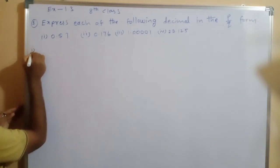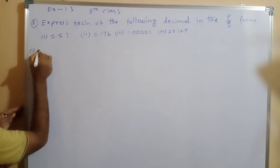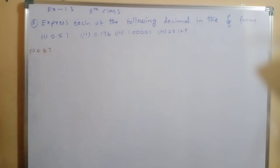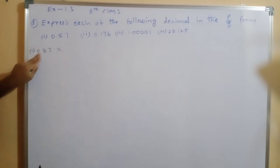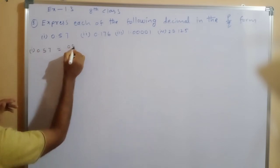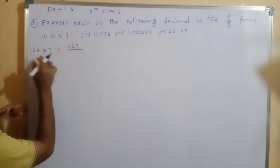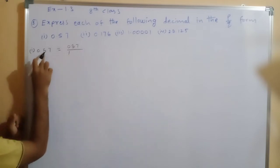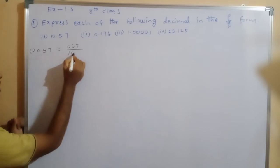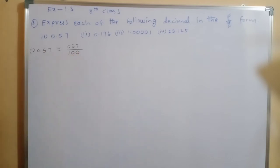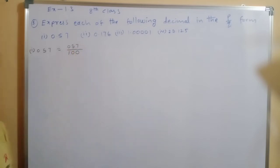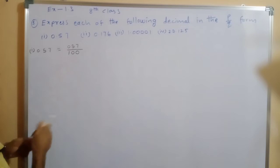The first problem: 0.57. We have to terminate the point, so we write 057 divided by — before the point we write 1, and after the point there are 2 digits, so we write 2 zeros: 100. Since 57 and 100 are co-primes, we cannot cancel any number.